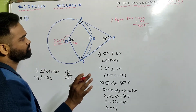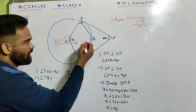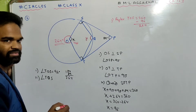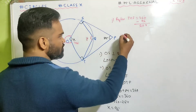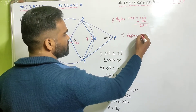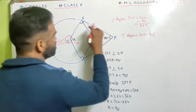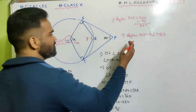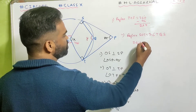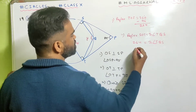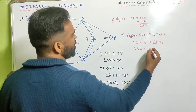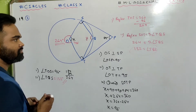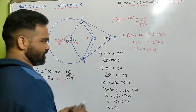They ask for angle SQT. Angle at the center is twice the angle at circumference. Reflex SOT will be twice angle SQT. So reflex SOT is 264, which equals twice angle TQS. Dividing by 2 gives 132, so angle TQS is 132 degrees.